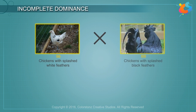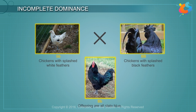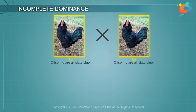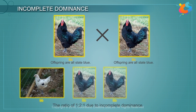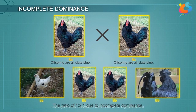When chickens with splashed white feathers are crossed with black feathered birds, their offspring are all slate blue. When these blue chickens are crossed among themselves, they produce splashed white, blue, and black offspring in the ratio of 1 : 2 : 1, due to incomplete dominance.